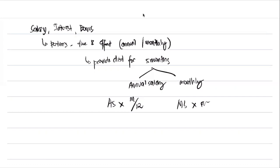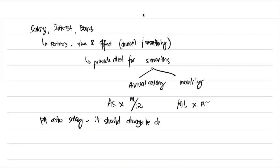Normally in profit distribution, salaries are provided either annually or monthly. For example, if you are to provide salary for only five months, and the given salary in the partnership agreement is an annual salary, then multiply the annual salary by the months over 12. If it is a monthly salary, multiply the monthly salary by the number of months. If there is a partnership agreement as to salary, it should always be distributed.